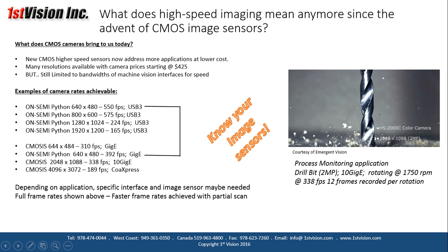A process monitoring example on our website shows a drill bit rotating at 1,750 RPM. Using a 2-megapixel camera with a 10GigE interface — which has a lot of bandwidth — running at 338 frames per second, we can capture 12 frames per rotation. Pretty impressive — off-the-shelf solutions today can bring us into high-speed image capture.